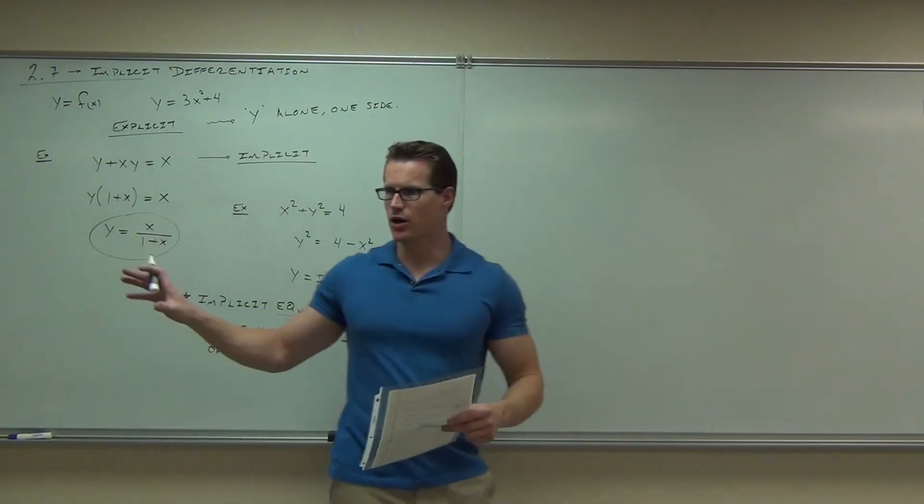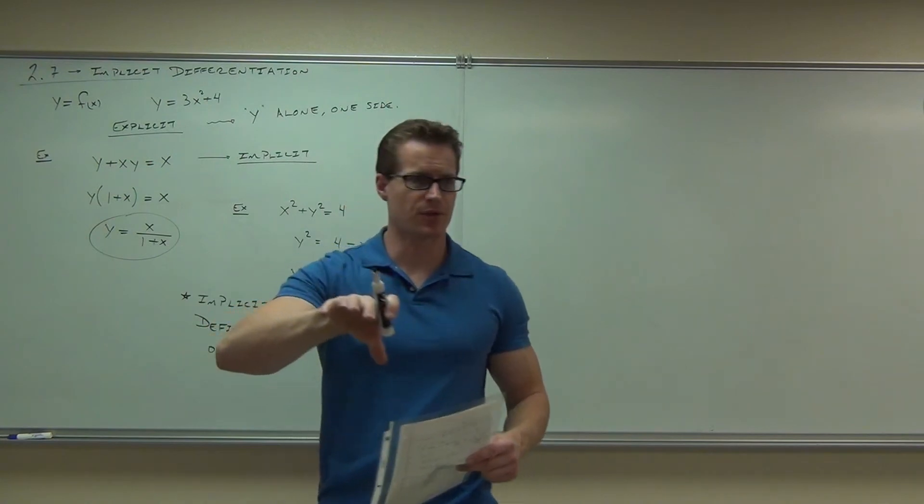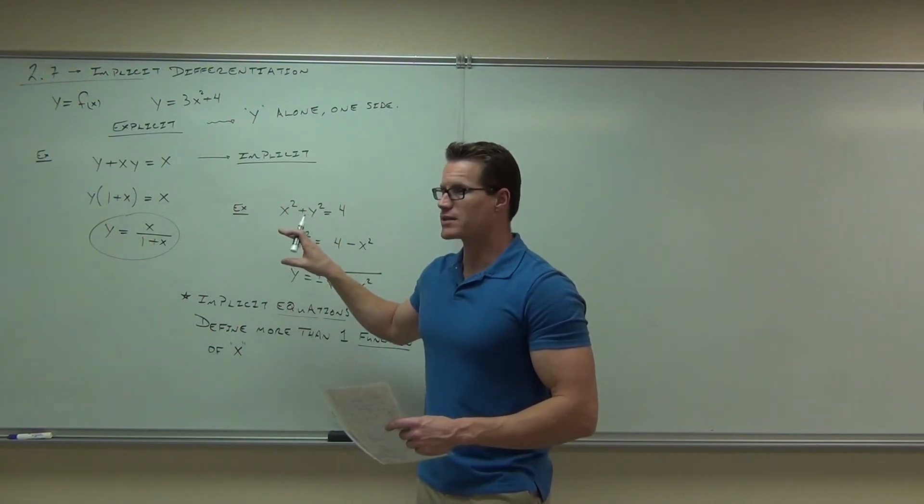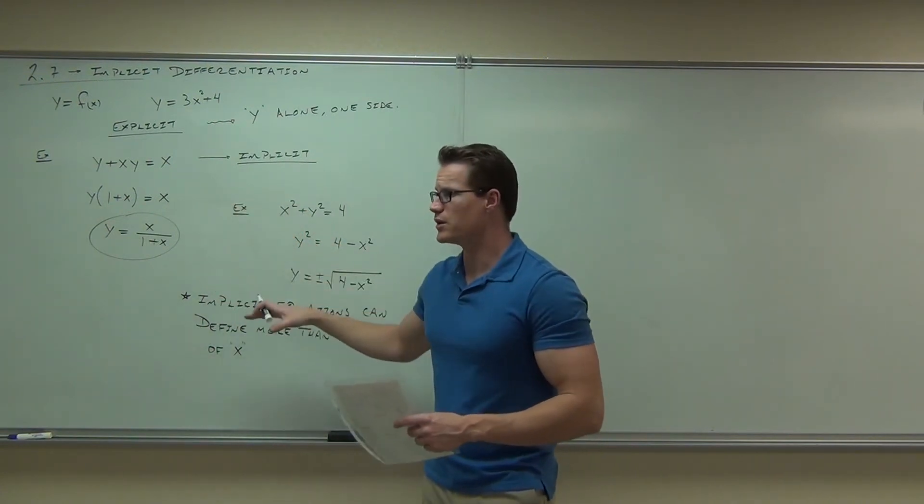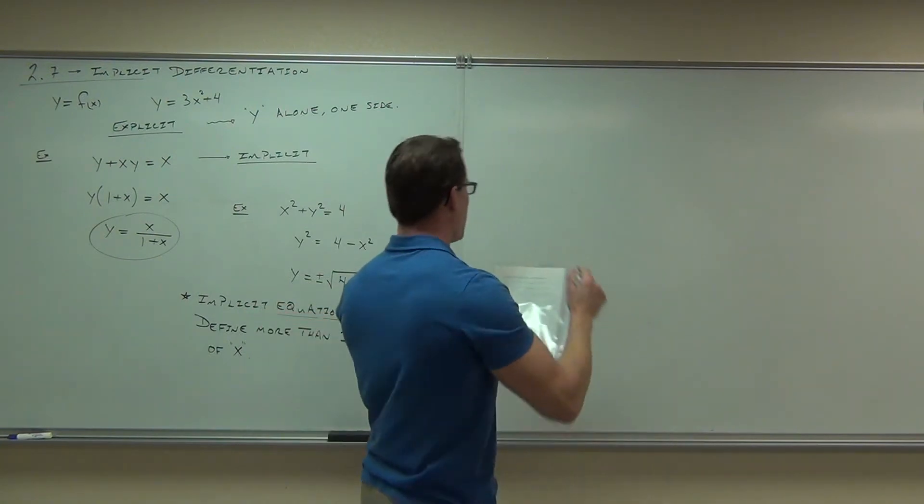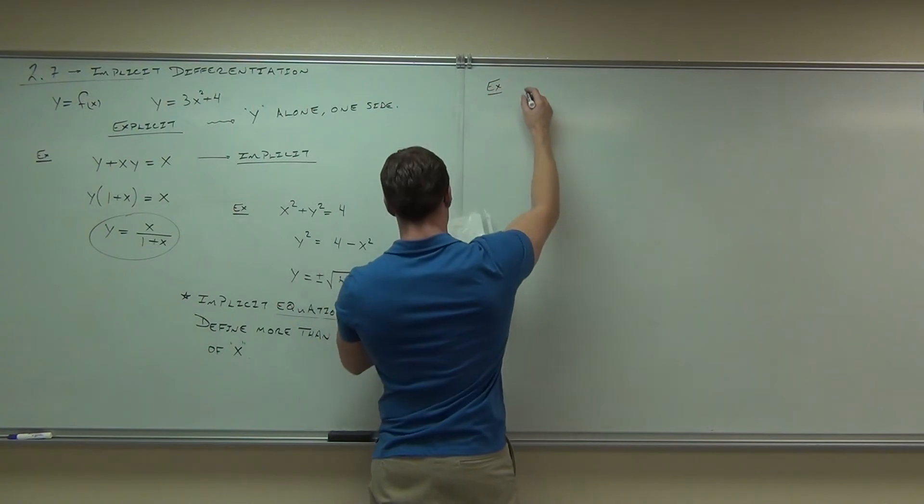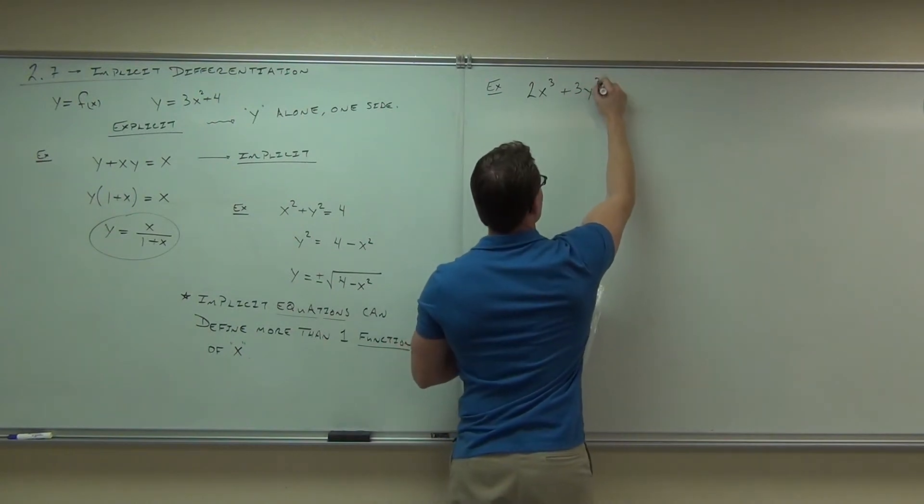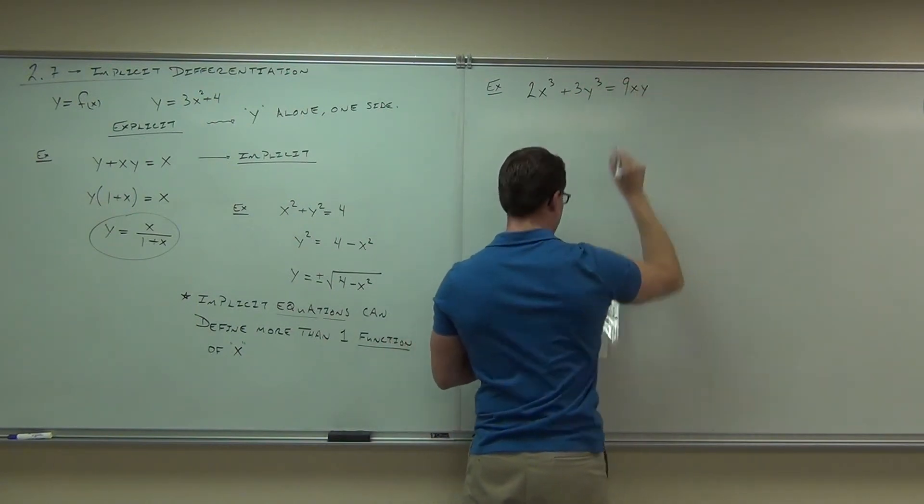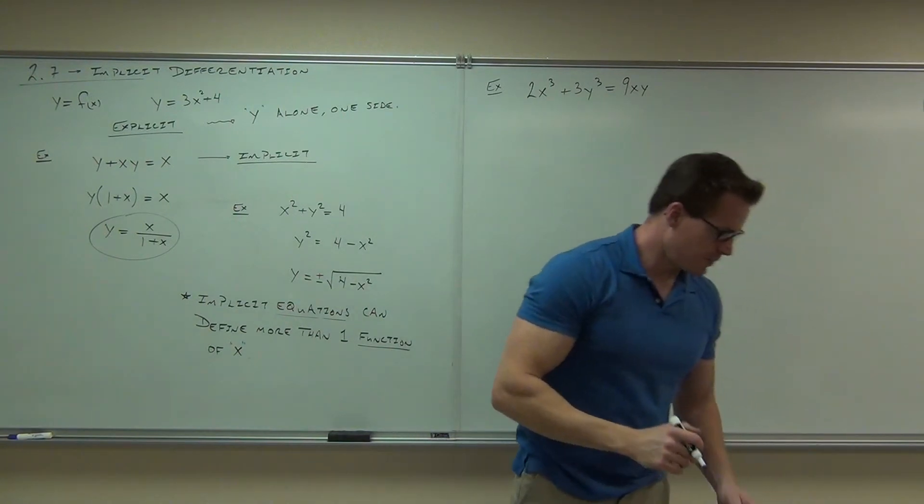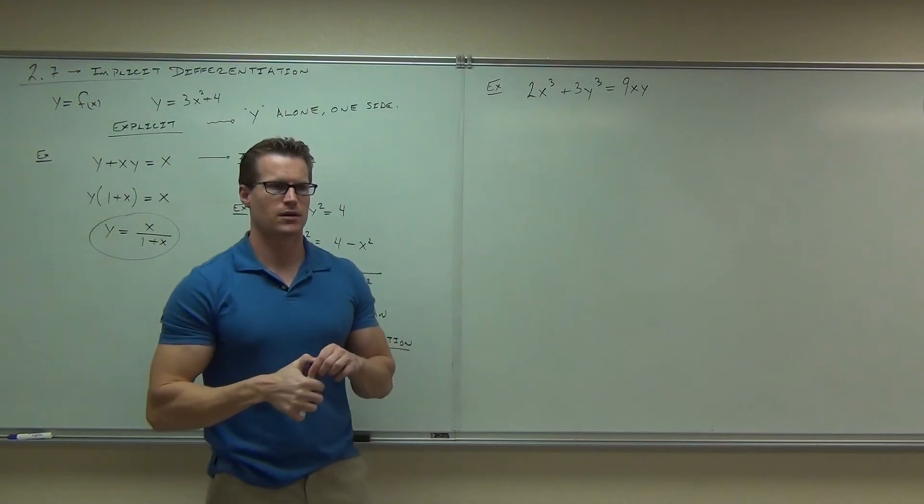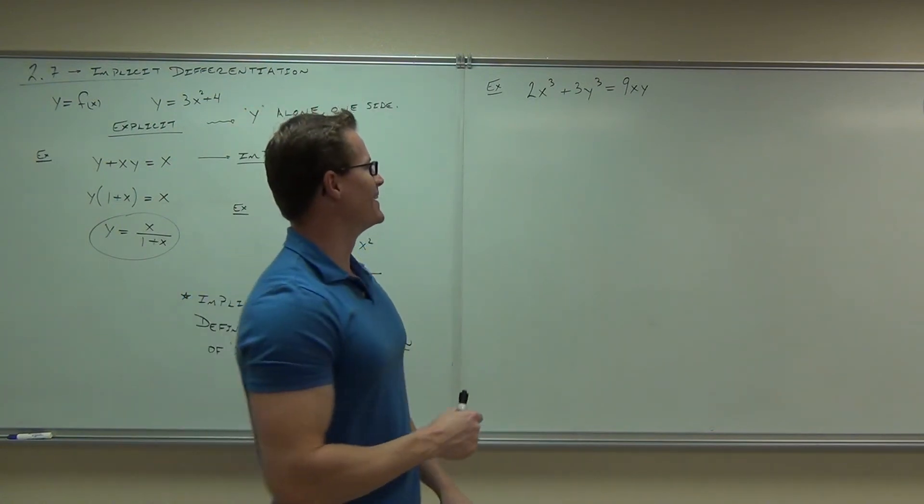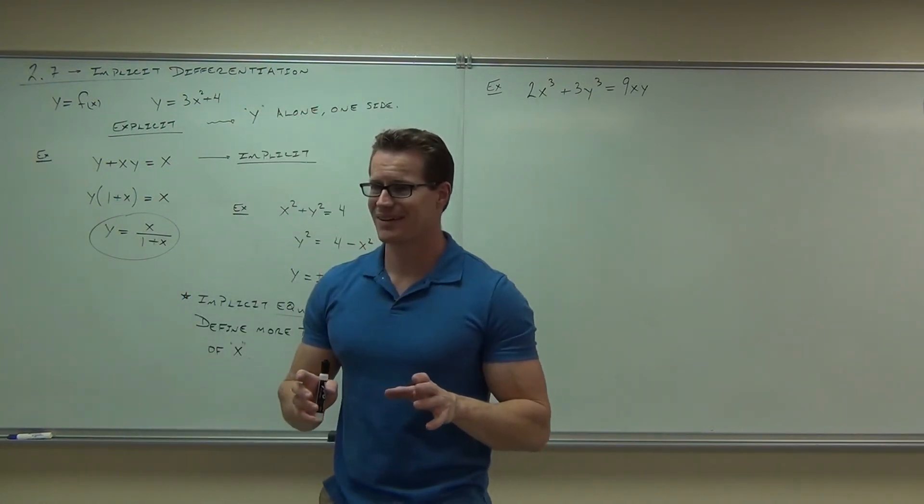So far we know what explicit means, I hope. We know what implicit means, I hope. That means bound up within that. Y is still a function of x. Sometimes we can solve for it and change it from implicit to explicit. And sometimes an implicit equation will make more than one function of x. Now, consider this example. How about this? Would you say implicit or explicit? What do you think? Super implicit. Well, that's another level. You agree that is implicit, right?